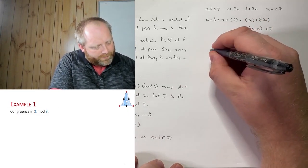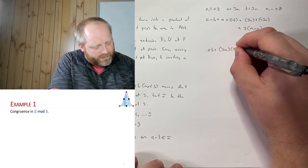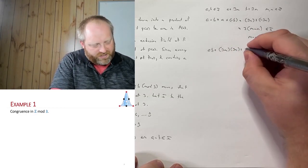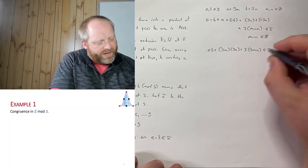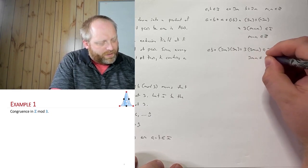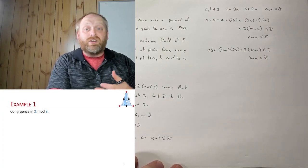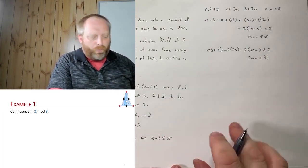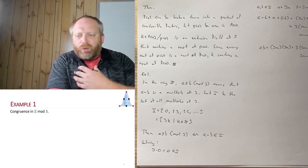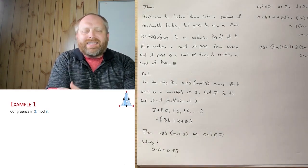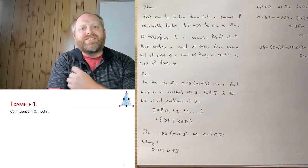For multiplication: A times B is just 3M times 3N, which equals 3 times 3MN, which is an element of I because 3MN is an element of Z. So I is non-empty, closed under subtraction, and closed under multiplication — thus it is in fact a subring. We're saying that A congruent to B modulo 3 is the same as saying the difference A minus B has to be an element of a specific subring.